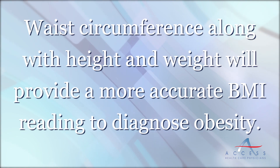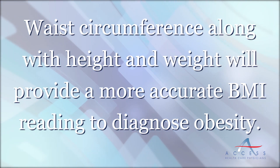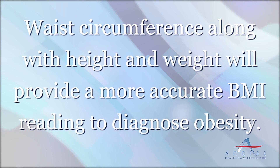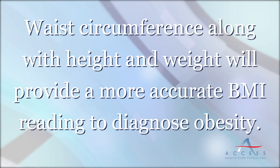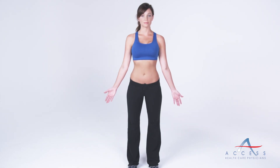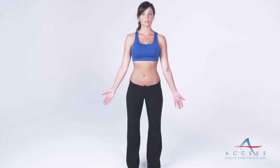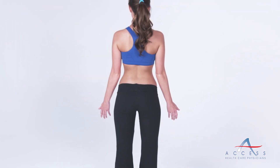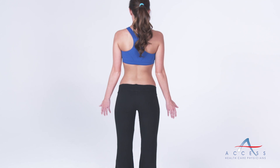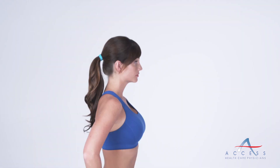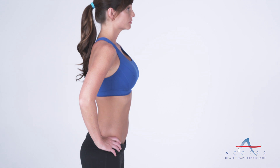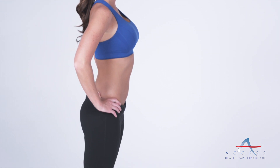In addition to measuring a patient's height and weight to calculate their body mass index, we are now adding one more documentation step that will better support the diagnosing of obesity. We need to measure and record in the medical record the patient's waist circumference. Determining the circumference of a patient's waist will indicate how much abdominal fat they're carrying, therefore leading to a more accurate assessment of their health risks.